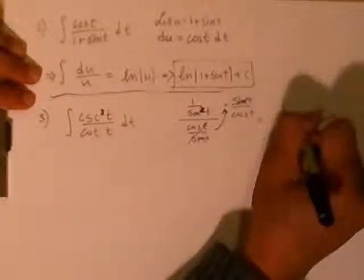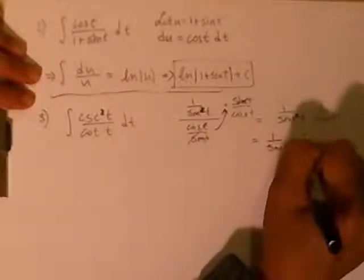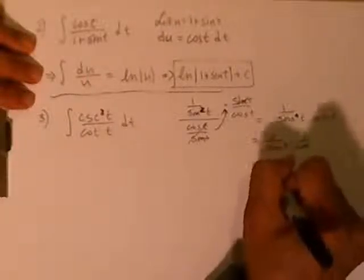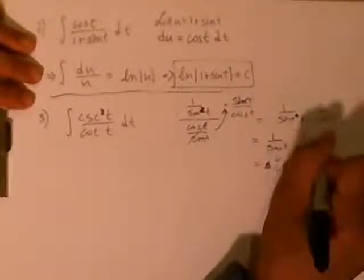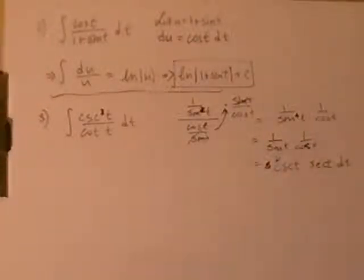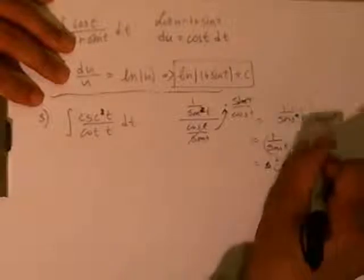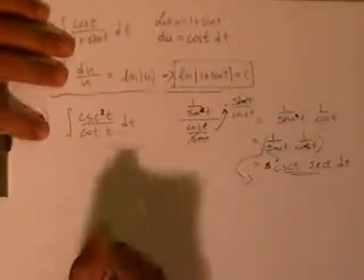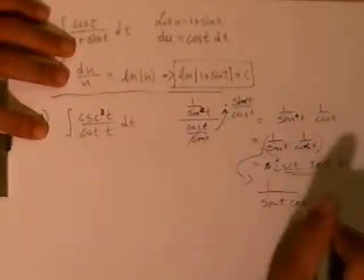That becomes cosecant of t times secant of t dt. We can also keep it as 1 over sine of t times cosine of t. If we multiply the numerator and denominator by 2, that gives us a useful form to continue working with.